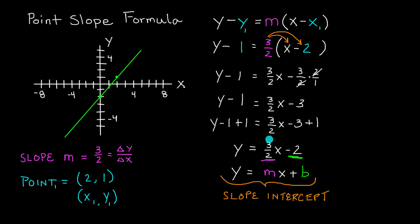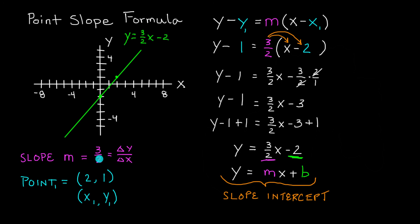We've drawn the line y equals 3 over 2 x minus 2, which has the point (2, 1) on it and a slope of 3 over 2. That's how you use the point-slope formula to find the equation of a line when you're given a point and the slope — and this will work with any point on the line. Thank you for watching, have an excellent day, and don't forget to subscribe.